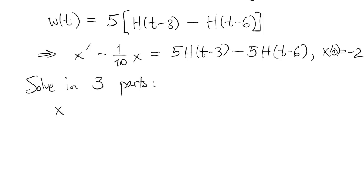That means we can solve this in three parts, the homogeneous part with the initial value. That's just negative 2 e to the t over 10.